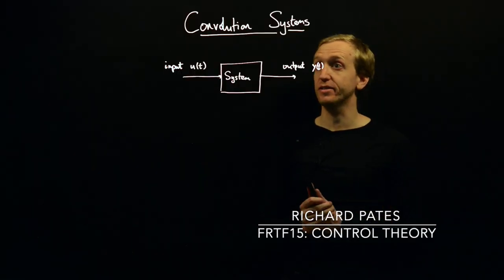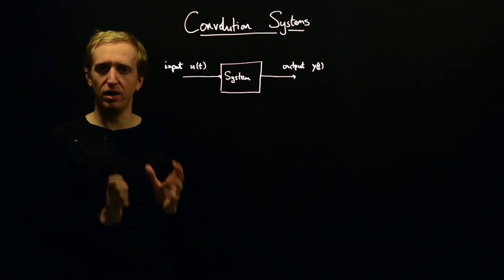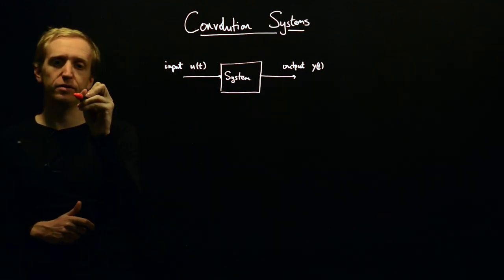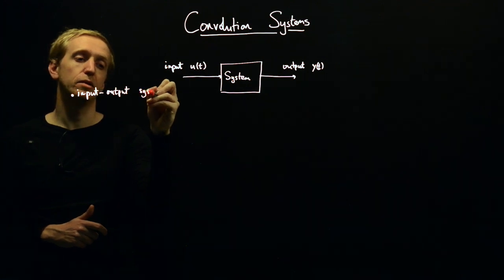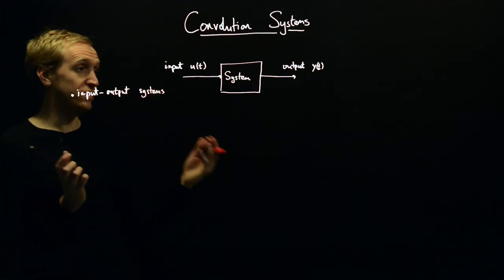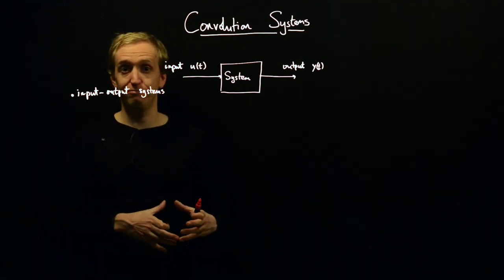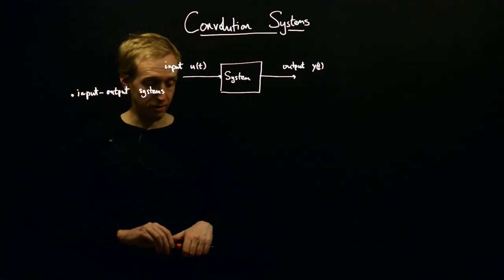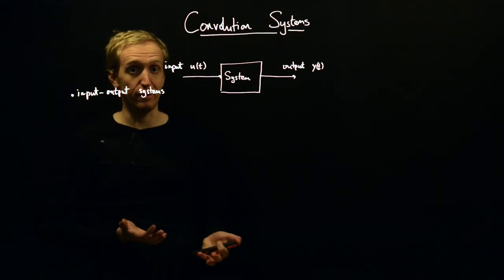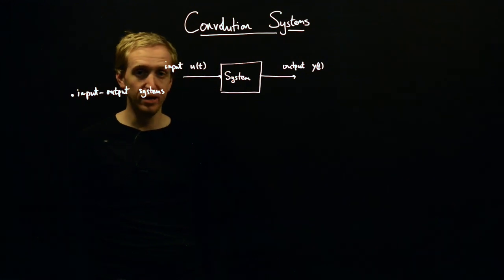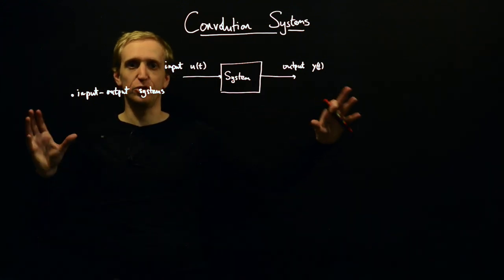Our first mini-lecture is on convolution systems. Convolution systems are a special class of input-output systems. Today we're talking about input-output systems, which are abstract mathematical objects that encompass the dynamical models of things we would like to understand. Control is all about understanding dynamical systems and designing control systems to make them behave in more beneficial ways. Input-output systems are the core building block for such systems.